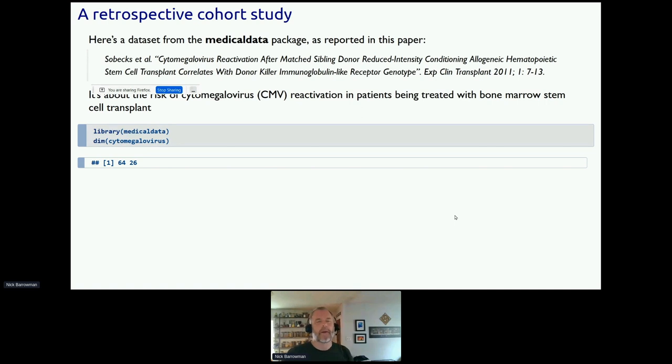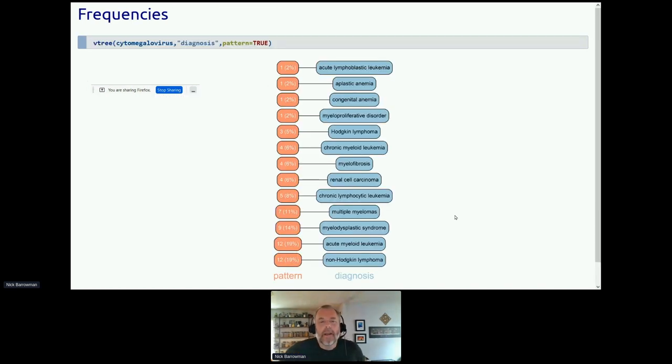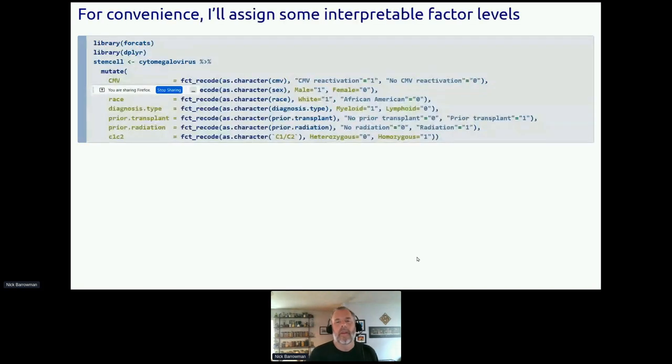And so I'm going to illustrate this with a retrospective cohort study. It's a data set from the medical data package in R, and it concerns patients who are being treated with a bone marrow stem cell transplant. And it's about the risk of cytomegalovirus or CMV reactivation in these patients. So my data set has 64 rows, so 64 patients and 26 columns. I'm going to start by looking at frequencies. These are the diagnoses and I'm using this special setting pattern equals true, which in this case just lets me order the diagnoses from the bottom, the most frequent ones up to the top, the least frequent ones. I'm just going to, as an intermediate step, I'm going to relabel things a little bit because the data set just had, say, ones and zeros for male and female and so forth.